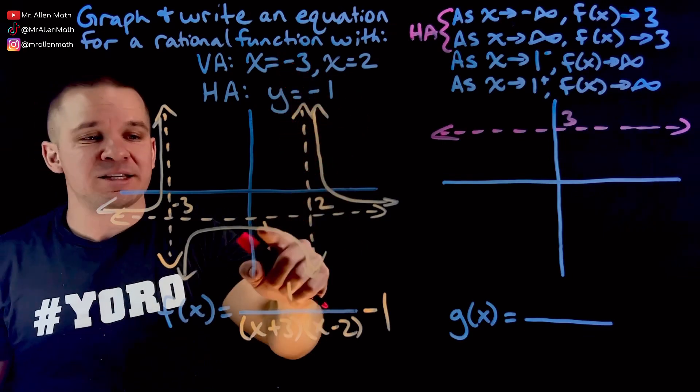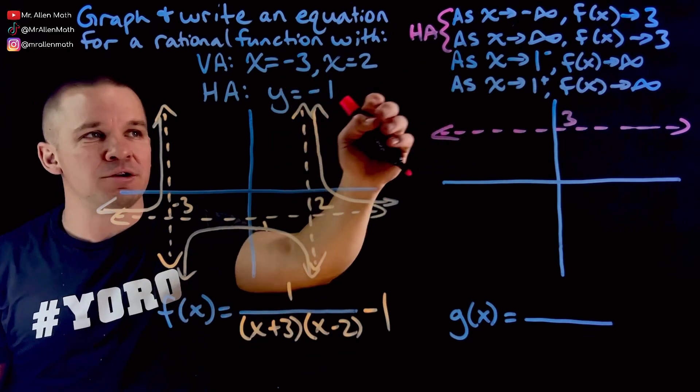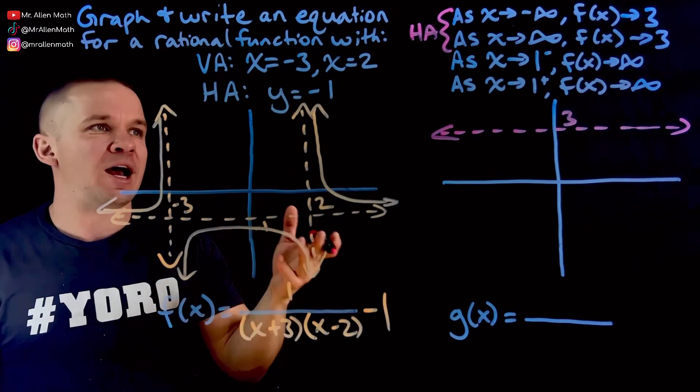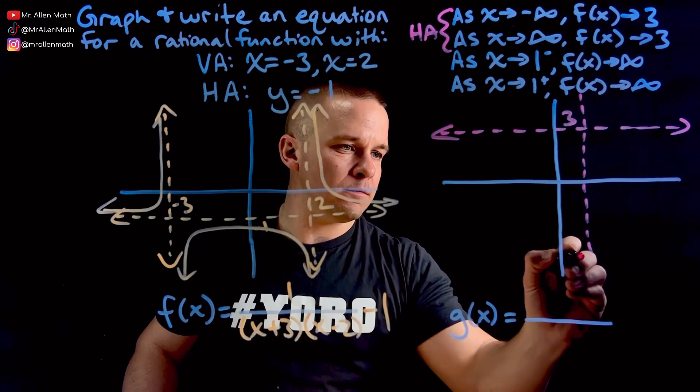As x approaches, say, two from the right side, I'm going to positive infinity. As x approaches two from the left side, I'm going to negative infinity. So that kind of notation there is talking about our vertical asymptotes. So I'm going to throw a vertical asymptote at positive one.